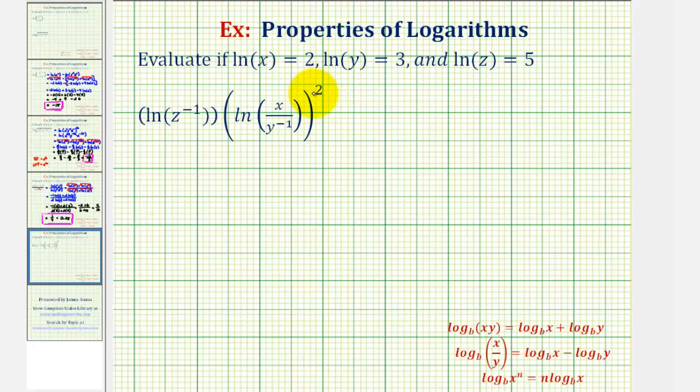So while it might be tempting to try to apply the power property of logarithms given here, where if we have log x to the n, this is equal to n times log x. But this is only true when the exponent n is attached to x, or the number part of the logarithm. This property does not apply if the entire logarithm is being raised to an exponent, which is what we have.